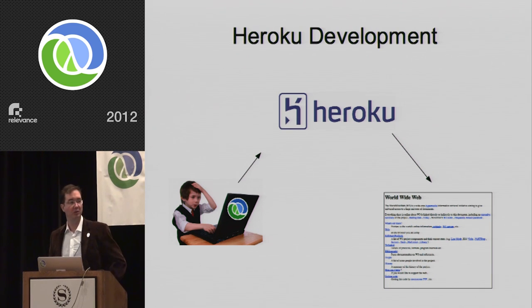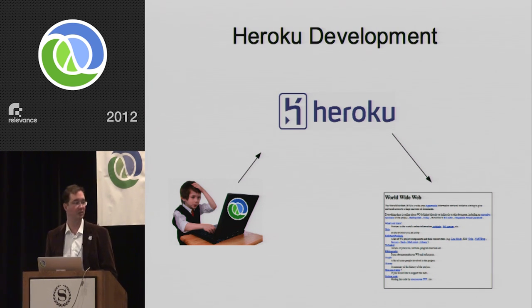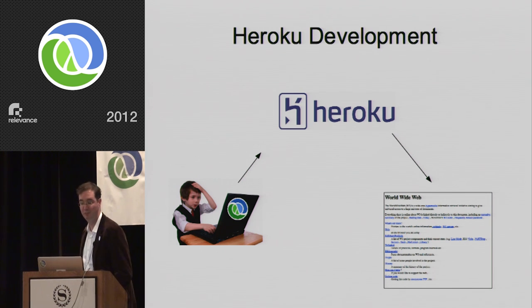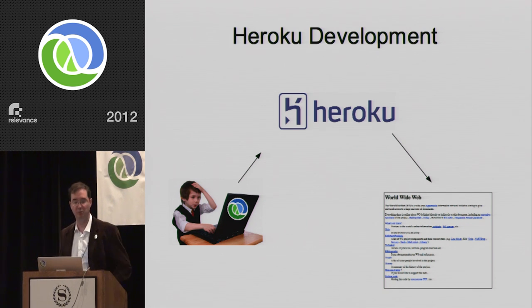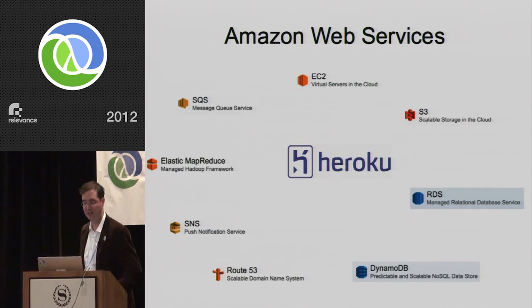Writing software for Heroku is really easy. You hack out your Clojure, push it up to Heroku with Git, and they launch it and manage it on their servers. You can then point your .com domain to it and you're all set.